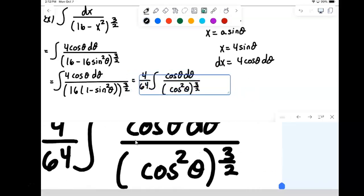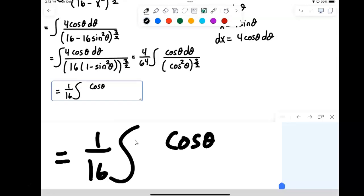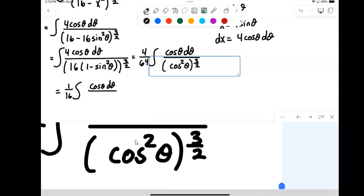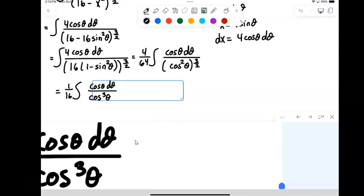I've got 4 over 64 on the outside. So that's going to simplify to be 1 sixteenth integral of cosine theta over, and then here we're going to have square root of cosine squared will be cosine, and then cubed.